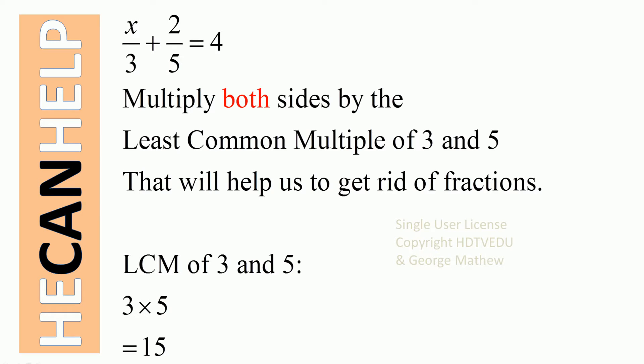We have division by 3 and division by 5. To get rid of divisions by 3 and 5, what do we do?